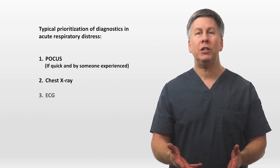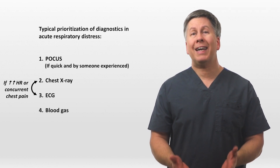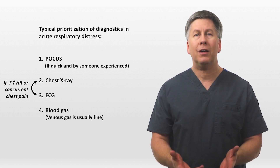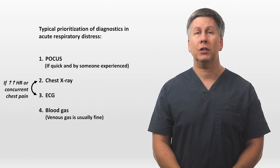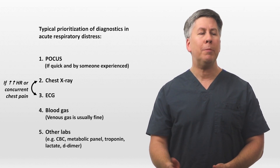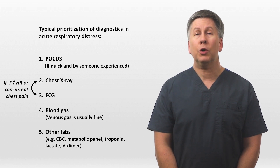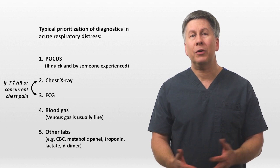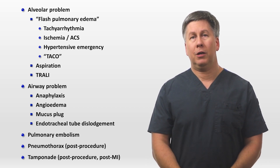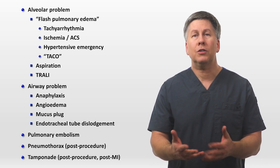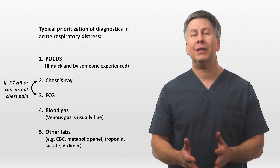Then comes chest x-ray and then ECG, though the order would be switched for someone with significant tachycardia or concurrent chest pain. Then a blood gas — in almost all cases, a venous gas is sufficient, as the pulse ox will give you a pretty good idea of oxygenation status. Calculating a precise A-a gradient from an arterial gas is not really something to spend time on during an acute situation. Finally, the other labs including CBC, metabolic panel, troponin, and lactate are relatively deprioritized because they take longest and are minimally helpful for the diagnoses under consideration. You should still draw a troponin as a baseline, but it's not as time critical as everything else.